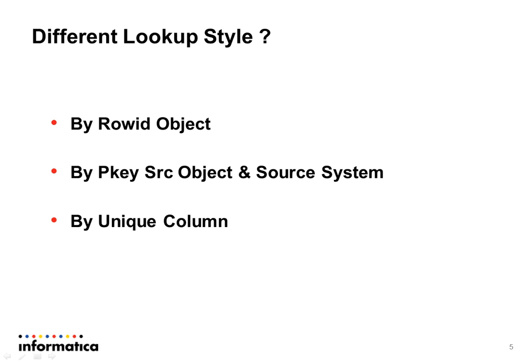What are the different lookup styles? There are multiple ways to configure a lookup. The first way is by row ID object, the second is by the pksrc object and source system, and the third is by a unique column. Out of these three, the most common is the pksrc object and source system, because here we preserve the actual primary key in the MDM.